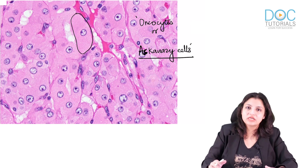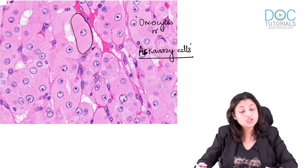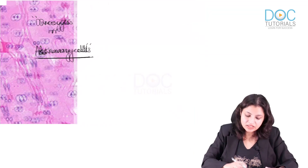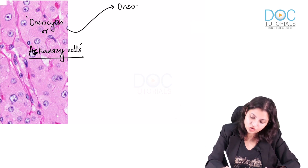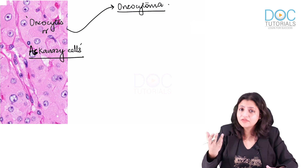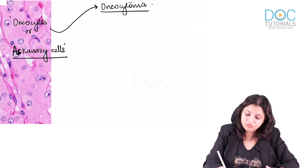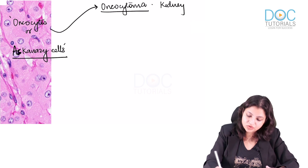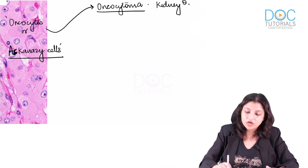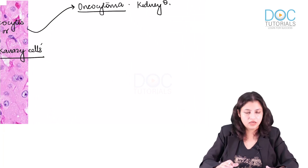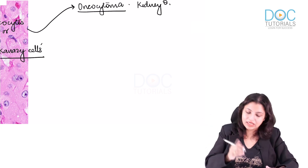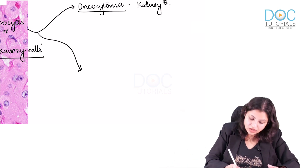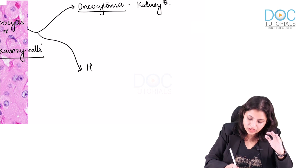Now, which pathological conditions should you be concerned with regarding oncocytes? Excessive oncocytes can be seen in a tumor called oncocytoma, which can occur in various organs like the salivary gland or kidney. Oncocytoma of the kidney is a very important image-based question because it shows a typical central scar and is often confused with chromophobe RCC.